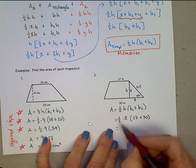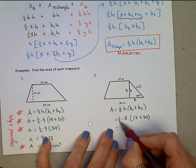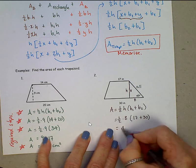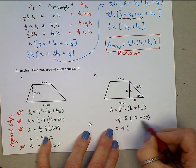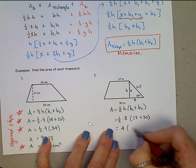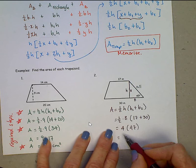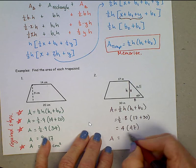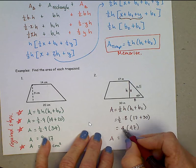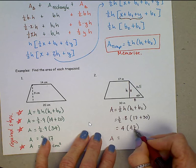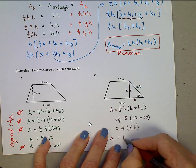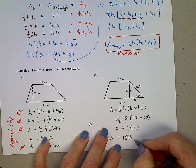Alright. In this case, because 8's even, I would absolutely do half of 8 first. That's 4 times over here, 17 plus 30. That's 47. When we multiply, try to do this in your head. 4 times 40. That's 160. 4 times 7, 28. 160 and 28 is 188. And these are inches squared.